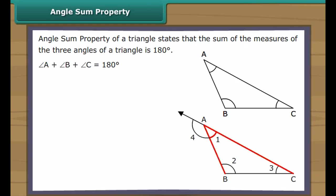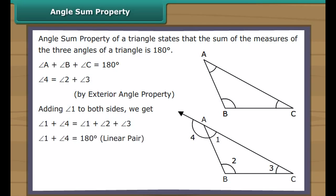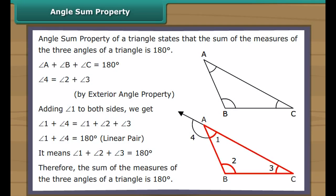Extend angle BAC. Angle 4 is equal to angle 2 plus angle 3 by the exterior angle property. Adding angle 1 to both sides, we get angle 1 plus angle 4 equals angle 1 plus angle 2 plus angle 3. Angle 1 plus angle 4 equals 180 degrees (linear pair). Therefore, angle 1 plus angle 2 plus angle 3 equals 180 degrees, proving that the sum of the three angles of a triangle is 180 degrees.